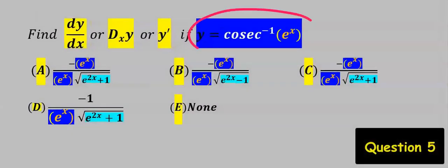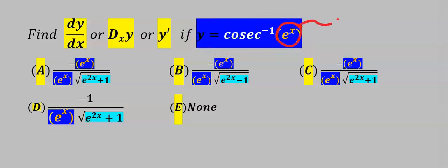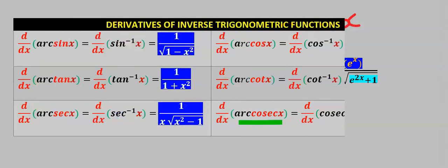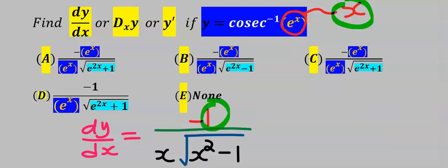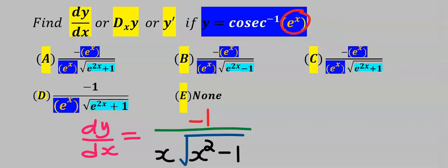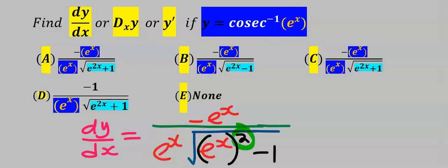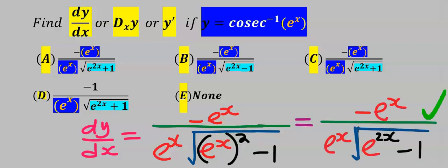Next let's find the derivative of cosec inverse of exponential x. Observe that exponential x has taken over the place of x. Arc cosec x is the same thing as cosec inverse of x. When you differentiate this you get the standard formula with a minus sign. Here we have exponential x instead of x, so differentiating exponential x gives exponential x. Wherever we see x we replace it with exponential x. This is our dy/dx. From the options our answer is B.